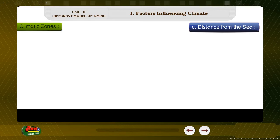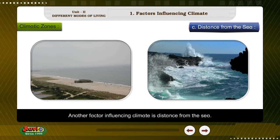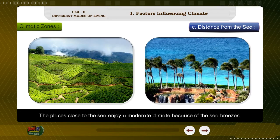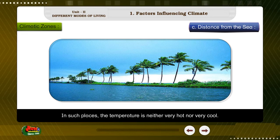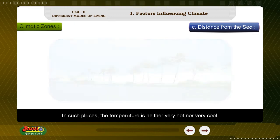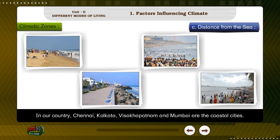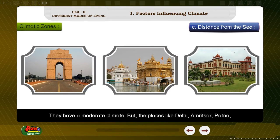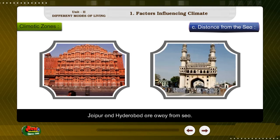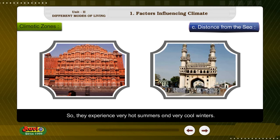Factor C: Distance from the sea. Another factor influencing climate is distance from the sea. The places close to the sea enjoy a moderate climate because of the sea breezes, which lessen the temperature of those places. In such places, the temperature is neither very hot nor very cool. In our country, Chennai, Kolkata, Visakhapatnam, and Mumbai are the coastal cities and they have a moderate climate. But places like Delhi, Amritsar, Patna, Jaipur, and Hyderabad are away from the sea, so they experience very hot summers and very cool winters.